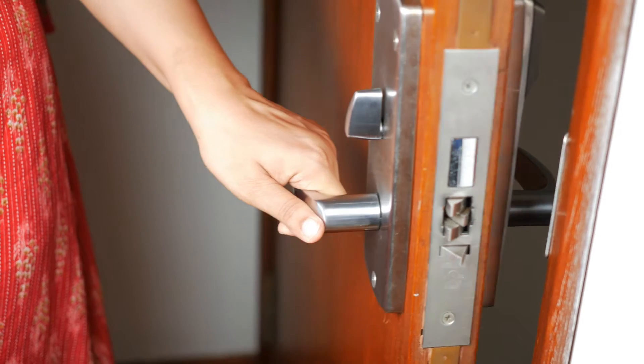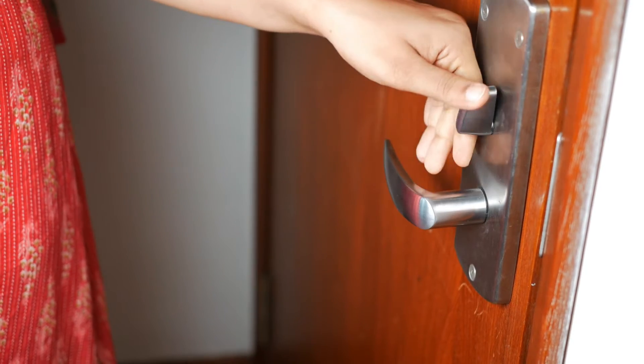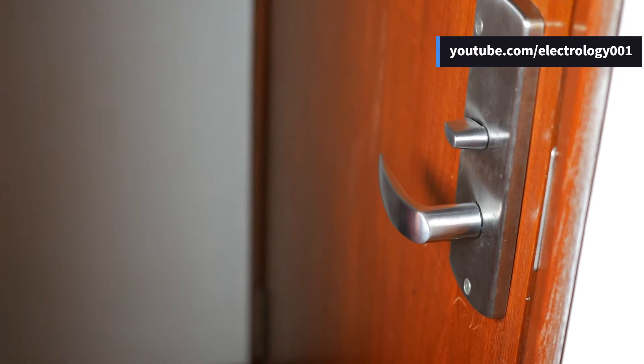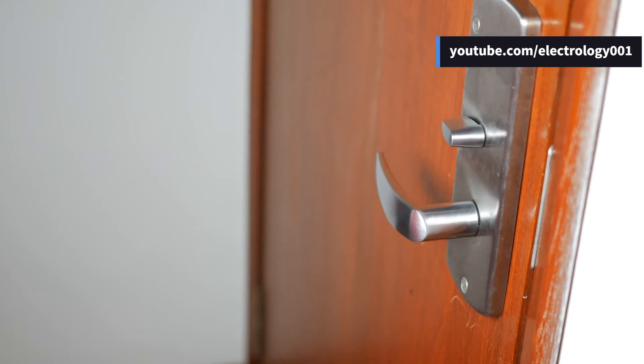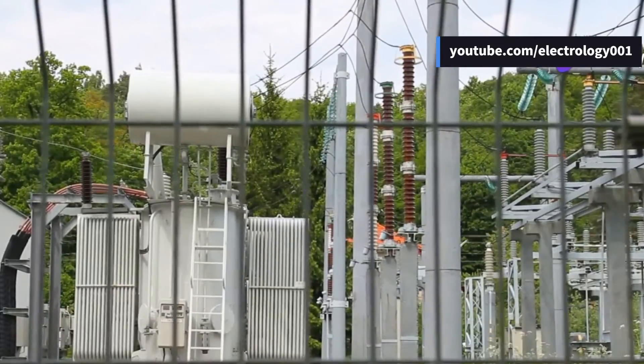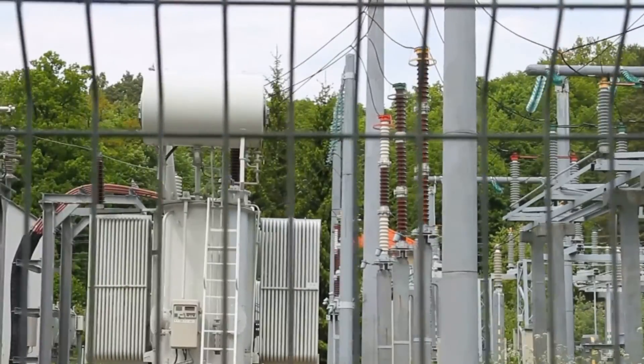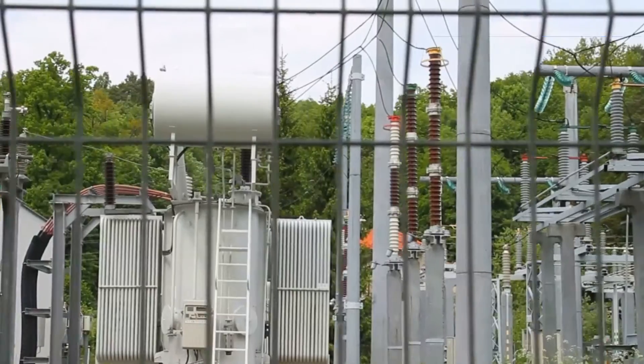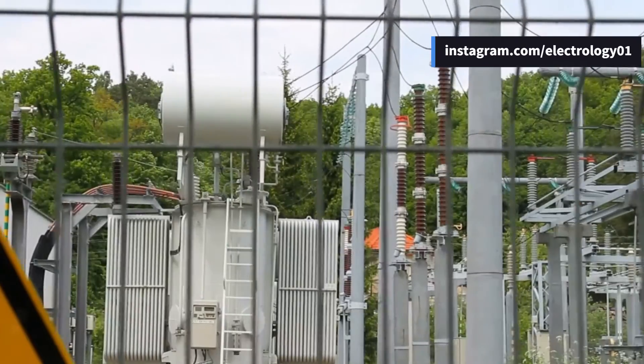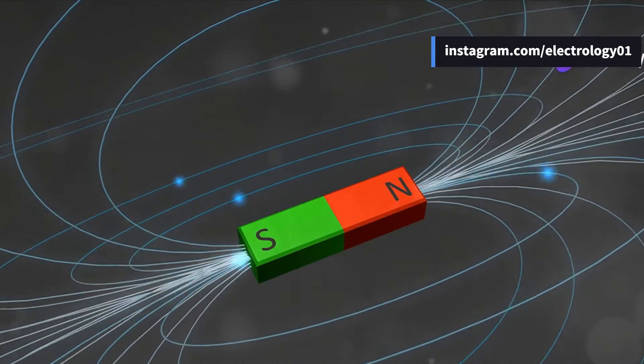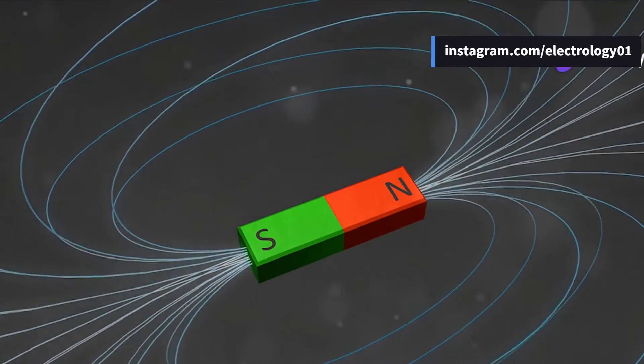Imagine constantly pushing a heavy door to close it, only to find it swings back slightly every time. This is similar to hysteresis loss in electrical machines. In the heart of every electrical machine, such as motors and transformers, the core materials undergo a process called magnetization and demagnetization. As the electric current flows, it magnetizes the core. When the direction of current reverses, it demagnetizes.